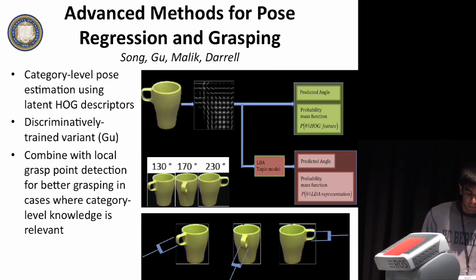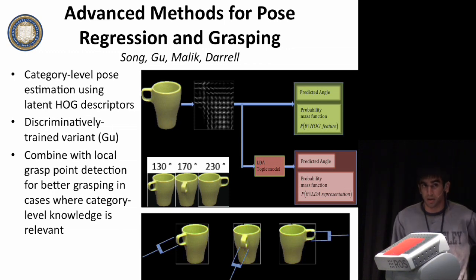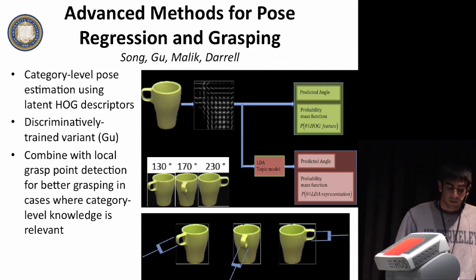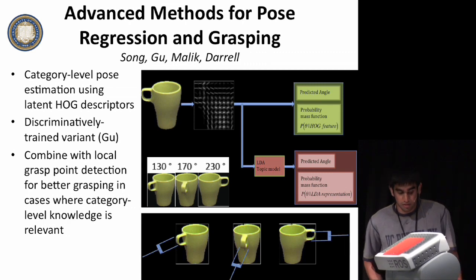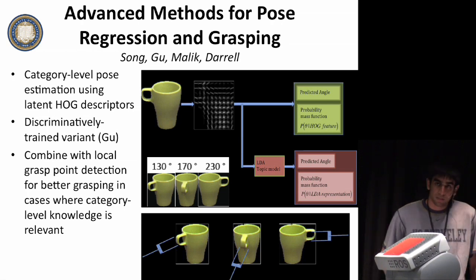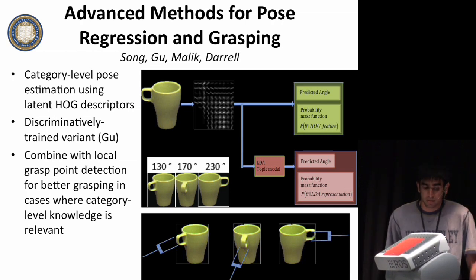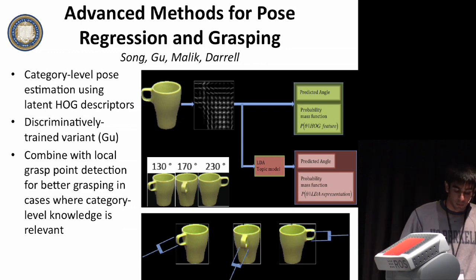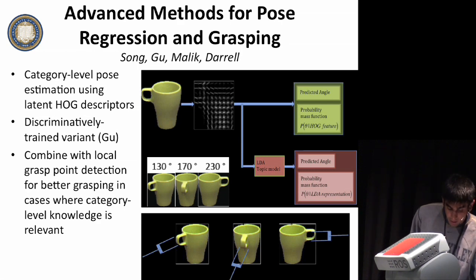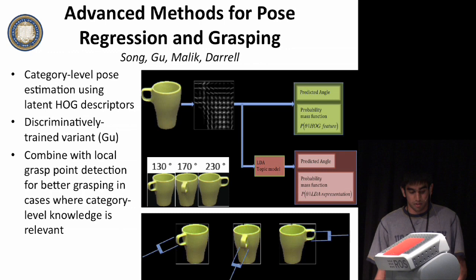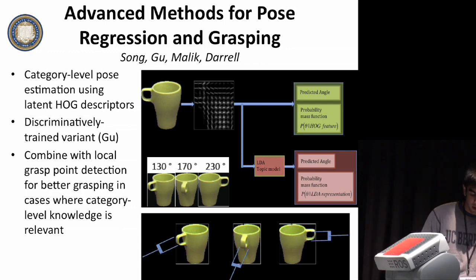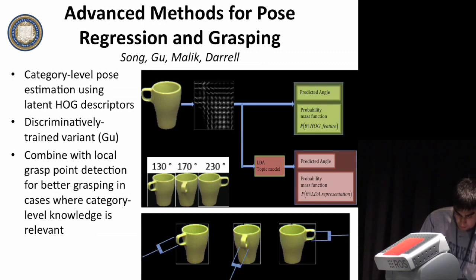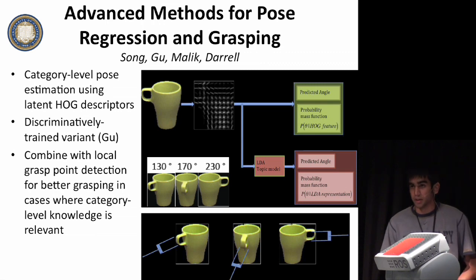When choosing grasp points, people generally use either a model-based approach or an image-based approach. Approaches based on 3D models can work well, but they're fragile if the models aren't very good. Recent methods choose grasp points based on local features and 2D images. We'd like to get the best of both worlds. Image-based methods use local patches with limited information about the actual object, and having an intermediate representation that takes the object and how you want to grasp it into account seems like it should really help get better results.